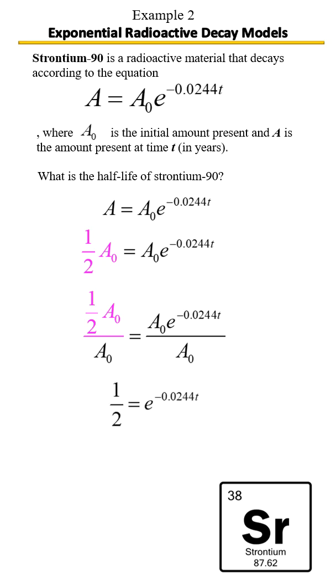Next we're going to get rid of e. To do that, we have to take the ln of each side, because ln e cancels.